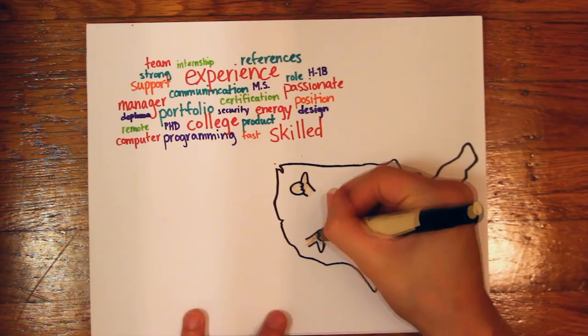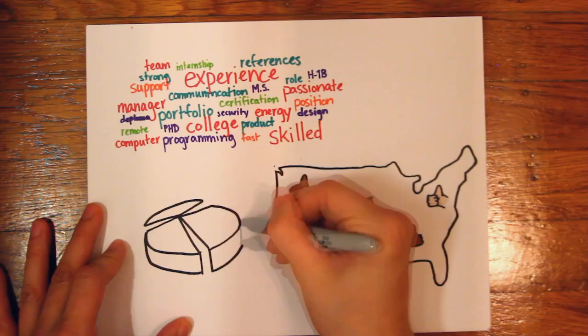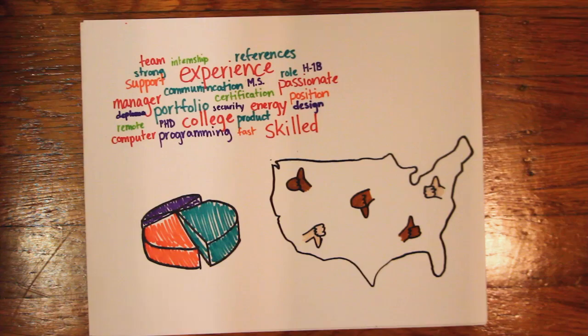If you then normalize those job postings you found with employment statistics, you could find information about how well areas are doing compared to other ones and why things were that way. That's the sort of stuff you can find using lots of good open data, and that's what Common Crawl's mission is all about.